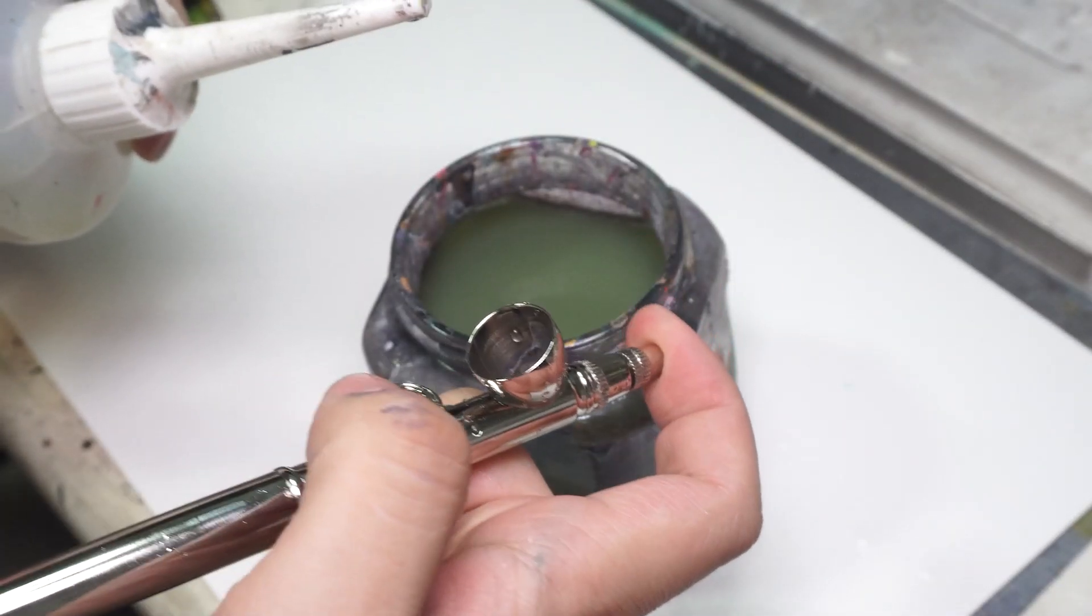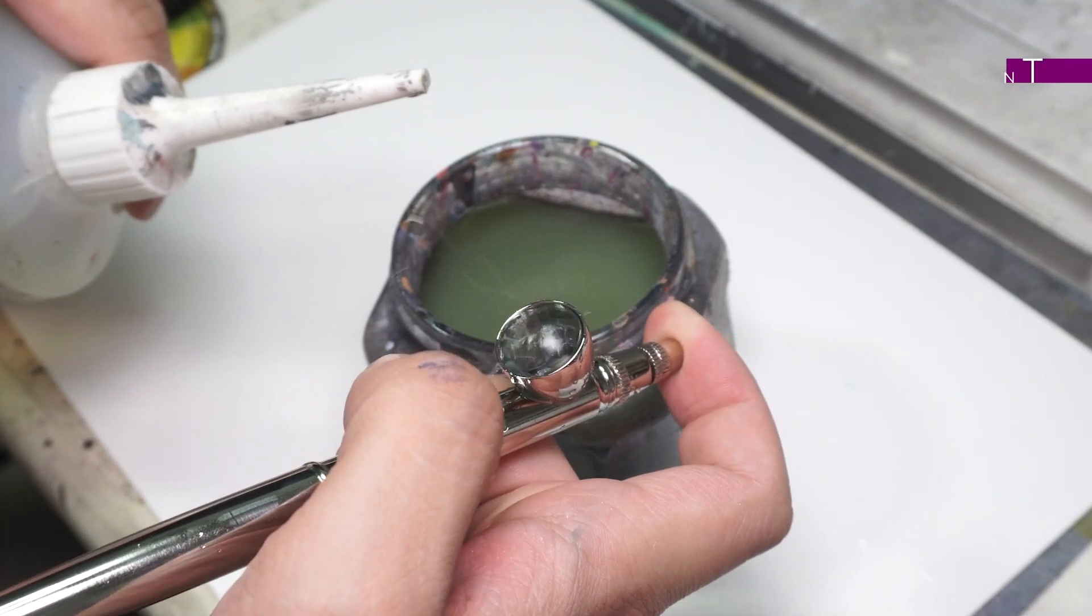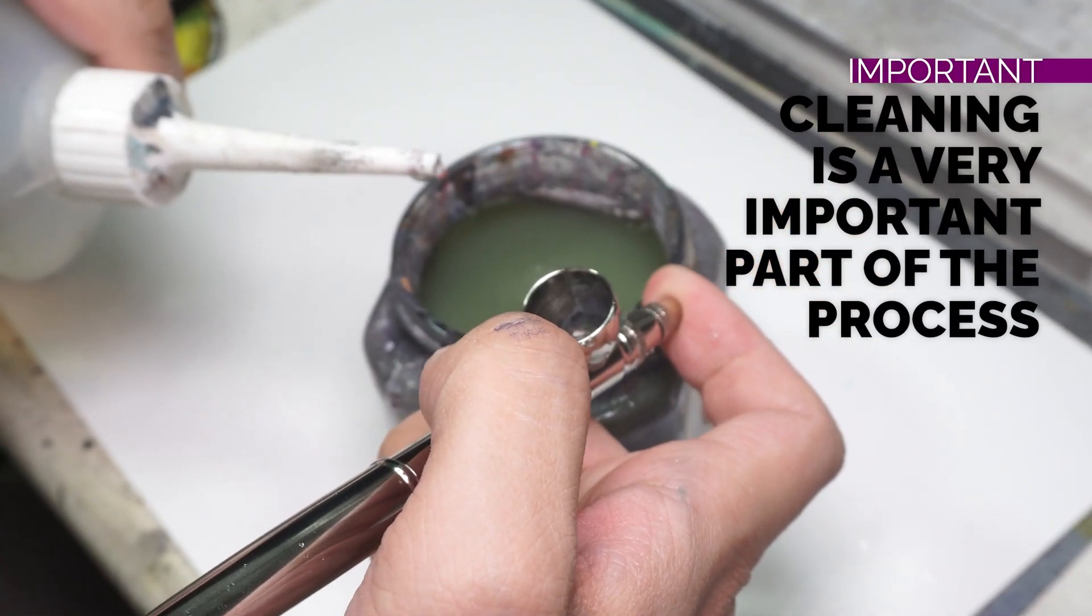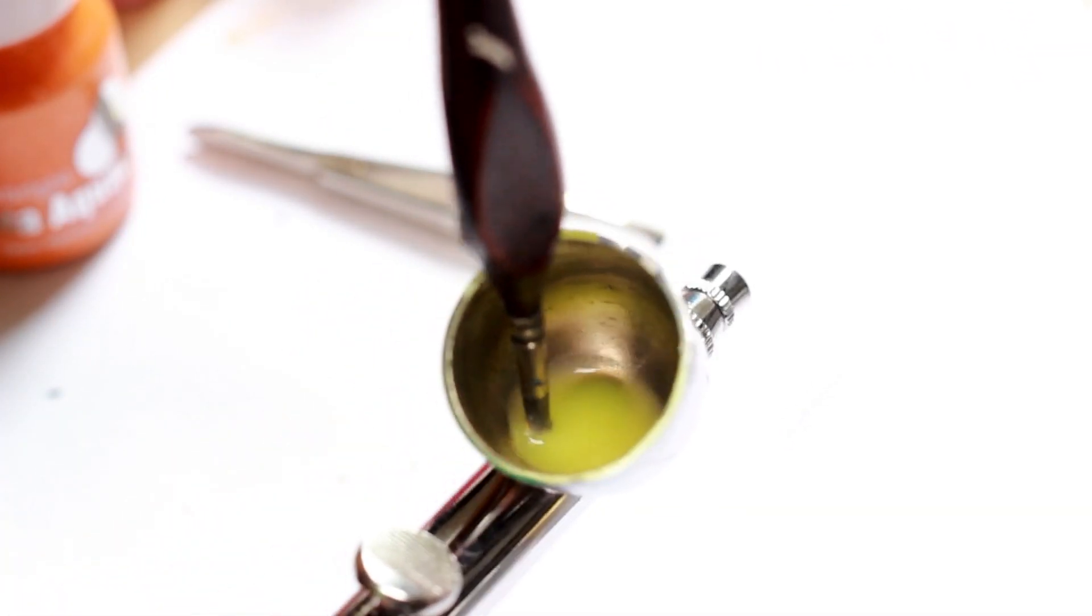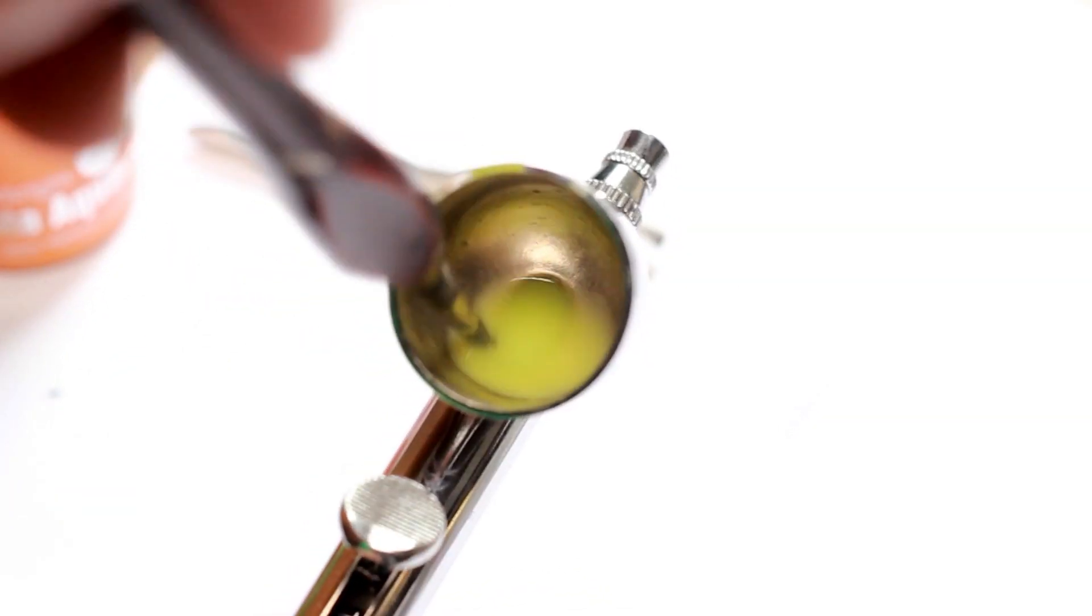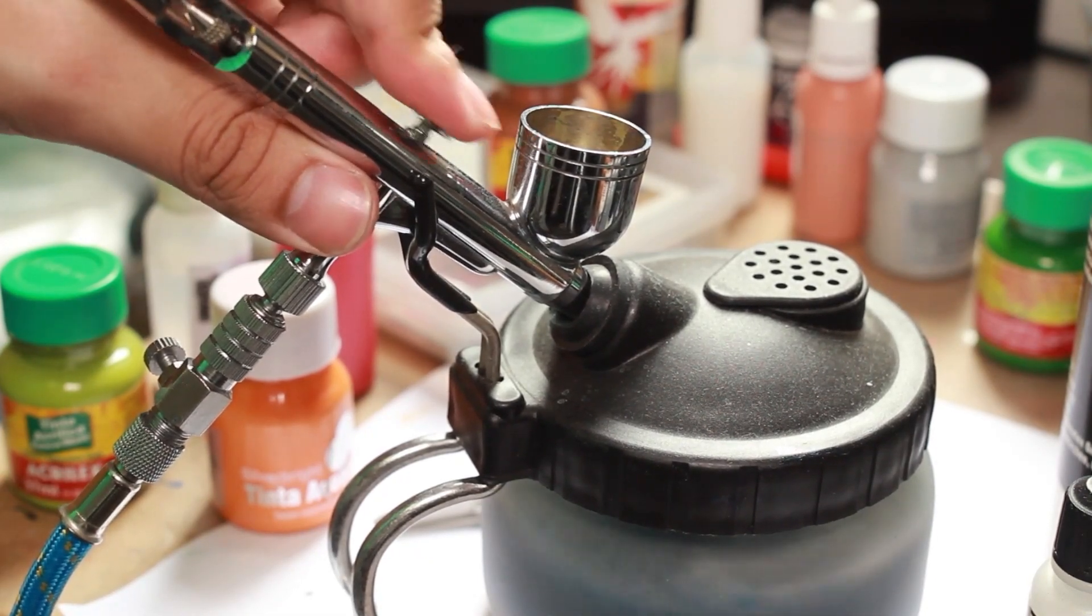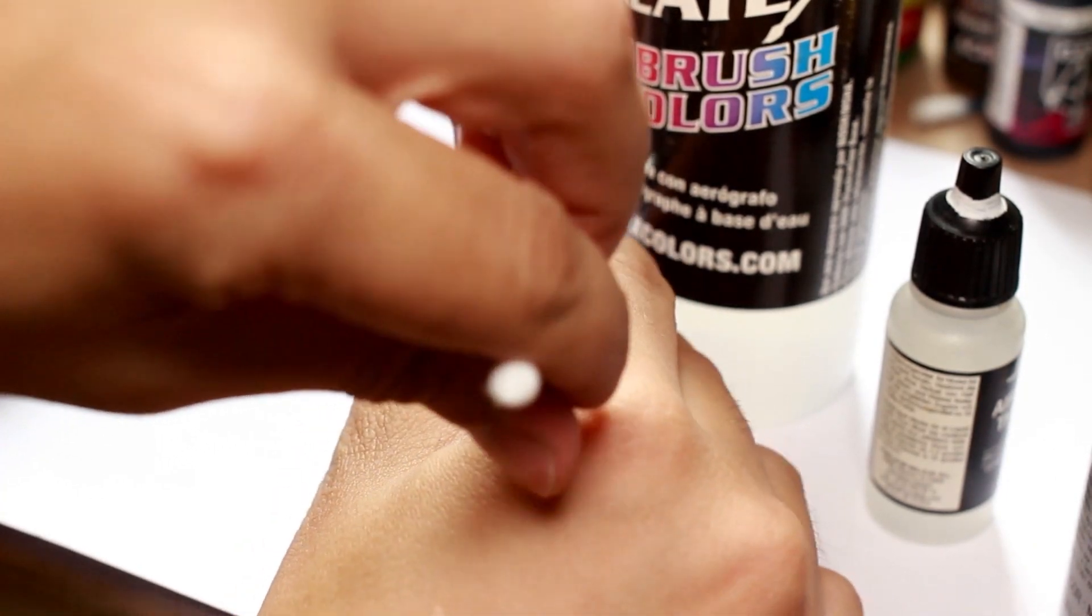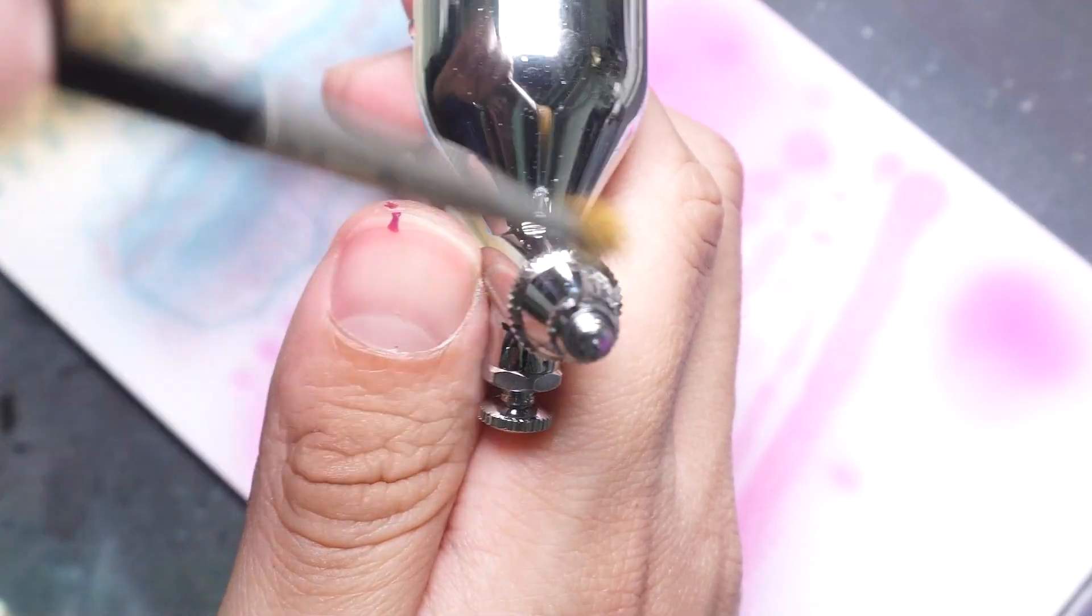When you finish airbrushing or you need to swap colors you need to clean your airbrush. You have several options like airbrush cleaning solutions, water, Windex, alcohol or nail remover. With an old brush I clean the cup and I spray the excess on my cleaning station. If you don't want to buy a cleaning station you can do it with a DIY solution but it's very important to have a proper place to dump the excess. To clean the tip of the airbrush I like to use a swab with Windex or an airbrush cleaning solution or even use an old brush.